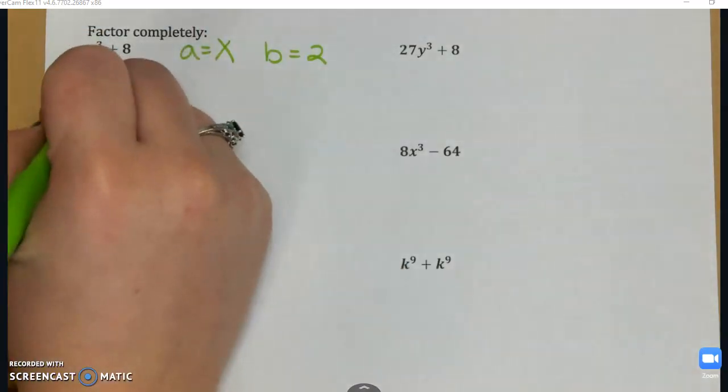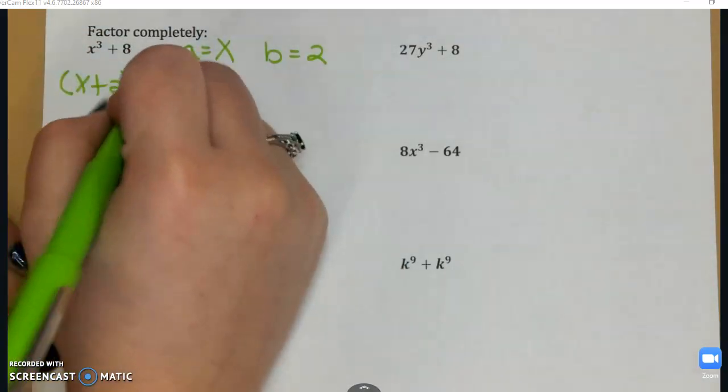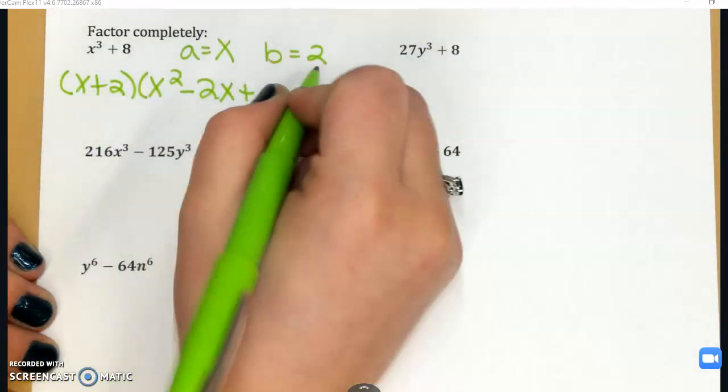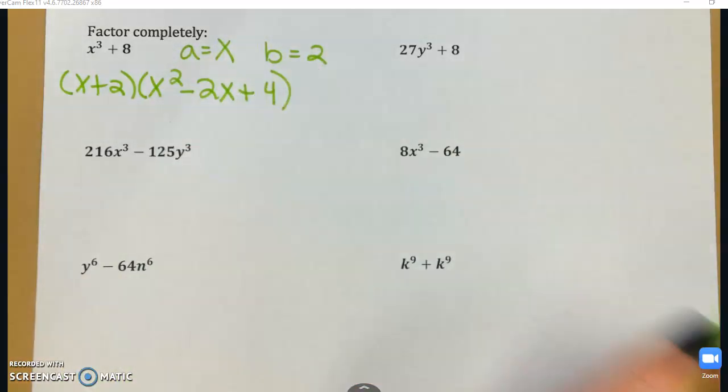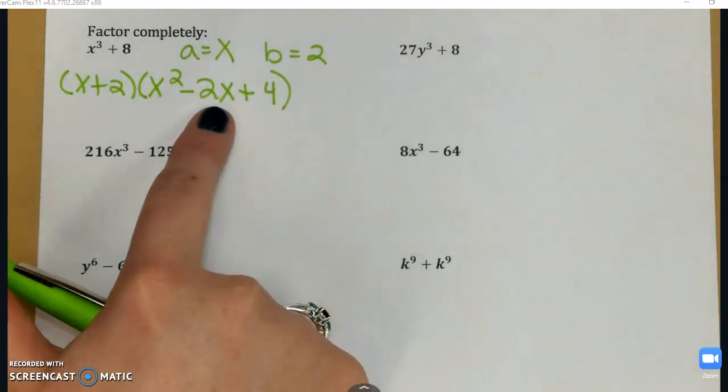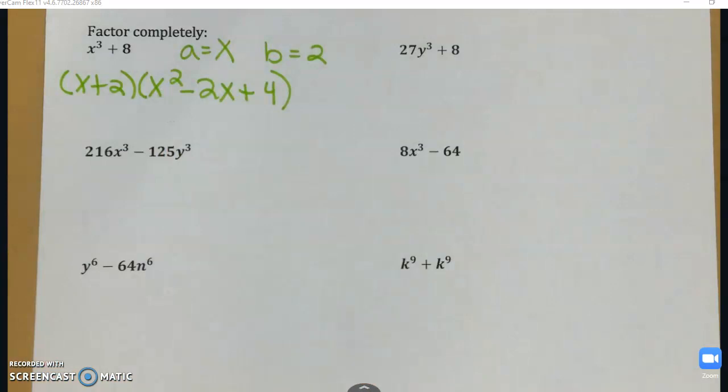So that's going to be (x + 2)(x² - 2x + 4). And once you've gotten to this step, you want to take a look at both of your parentheses to see if there is a GCF or something else you can factor further. No GCF. This trinomial cannot be factored because there's no factors of 4 that add to negative 2. So I know I'm done.